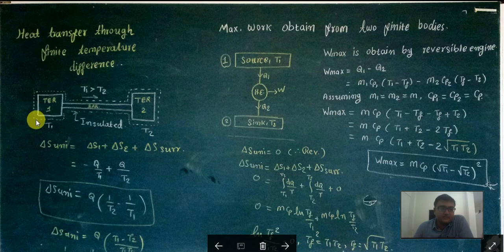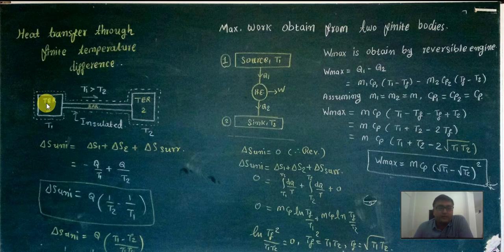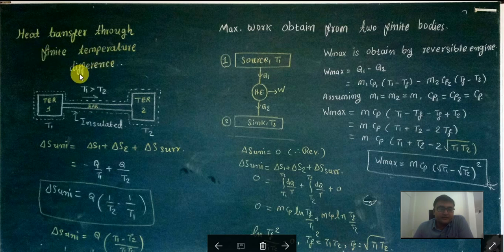Let's discuss first heat transfer through a finite temperature difference. Here we are taking two thermal energy reservoirs. As we know, a thermal energy reservoir means if you are giving or removing an infinite amount of heat from it, it will not change its temperature. So what we need to find out is the delta S — entropy — using the equation involving heat.